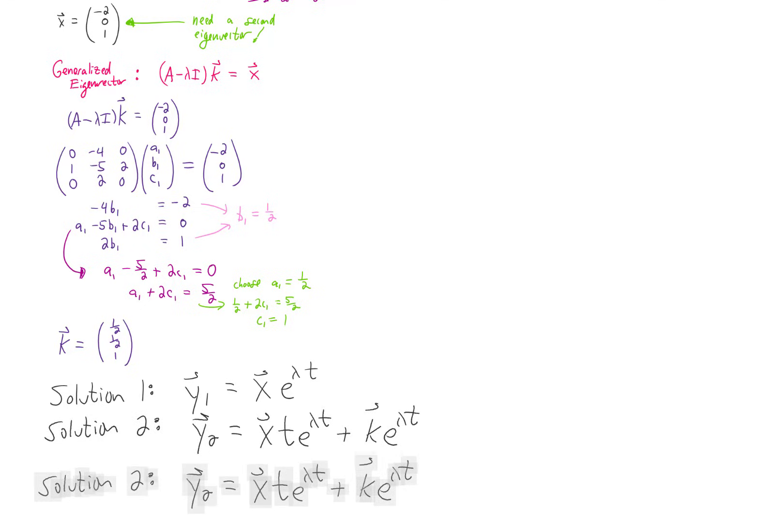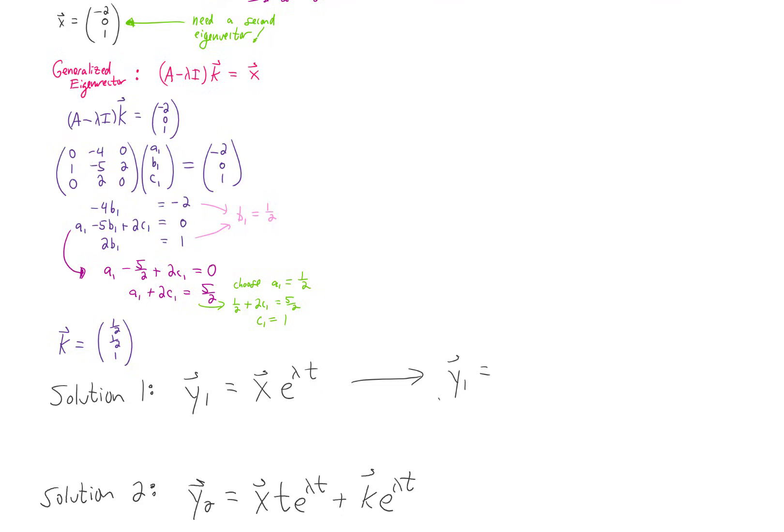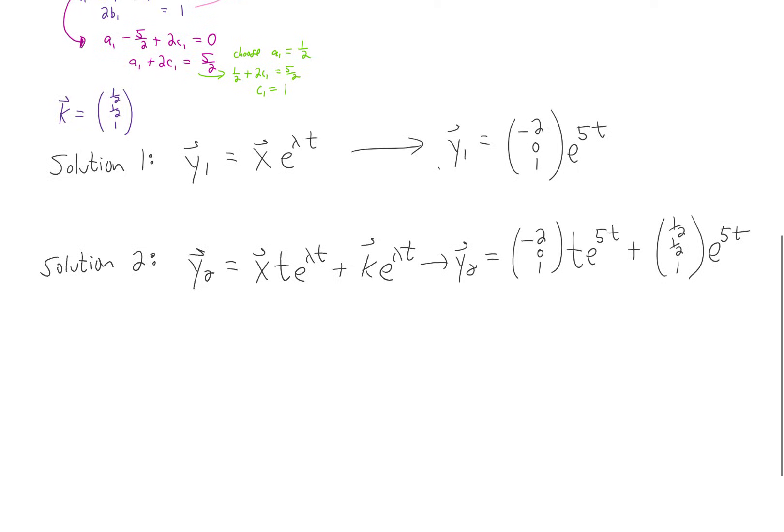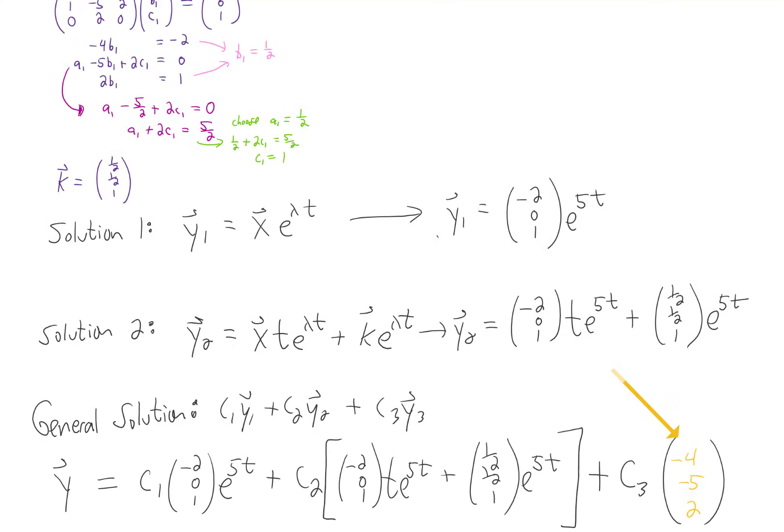So I'm going to give myself a little bit of space here to write this out. In this problem, our first solution is (-2, 0, 1)·e^(5t). And our second solution is going to be (-2, 0, 1)·t·e^(5t) plus our generalized eigenvector times e^(5t). Okay, that looks pretty messy, but we can get messier because we're supposed to write out a general solution typically. The general solution is going to be c₁y₁ + c₂y₂ + c₃ times whatever we get for that third eigenvector corresponding to that third eigenvalue, which was zero. That's going to look like this. Okay, there's the general solution. I even went ahead and solved for the eigenvector associated with the eigenvalue zero. So there's a little invisible e^(0t) over here.